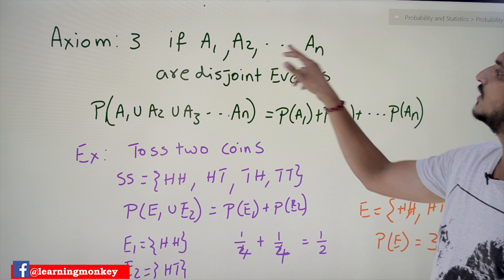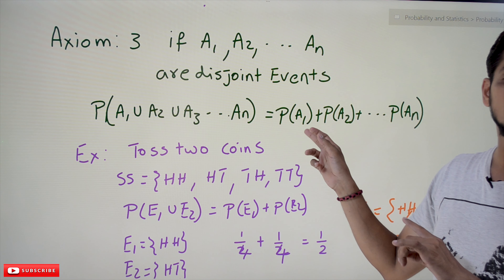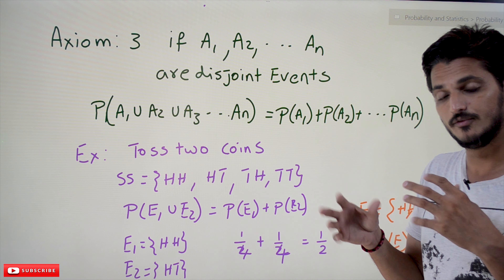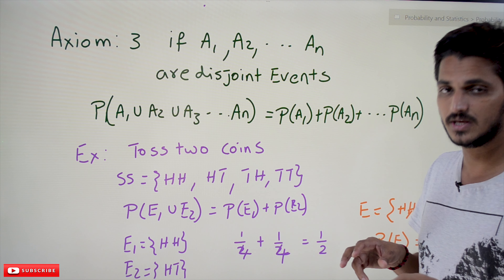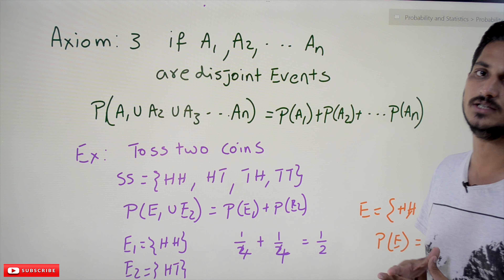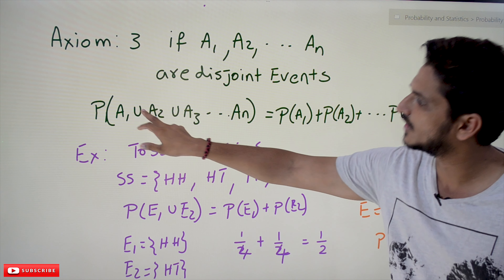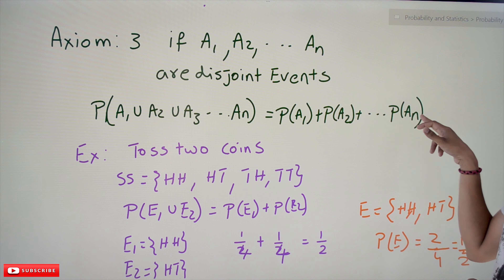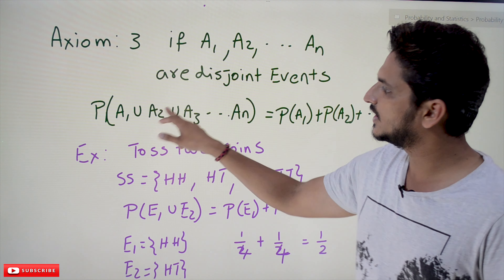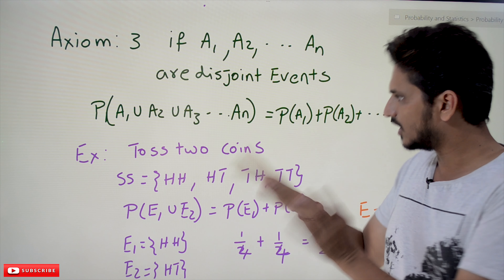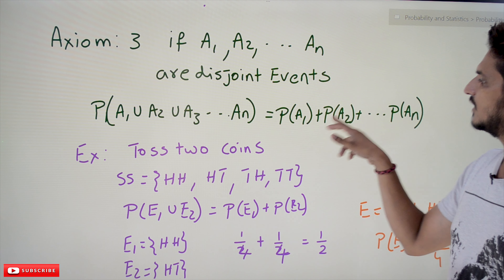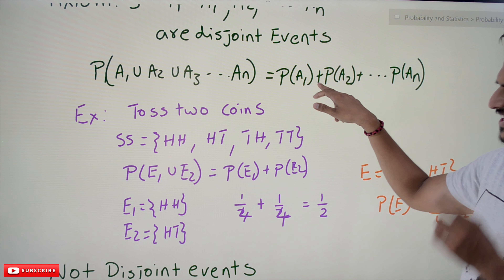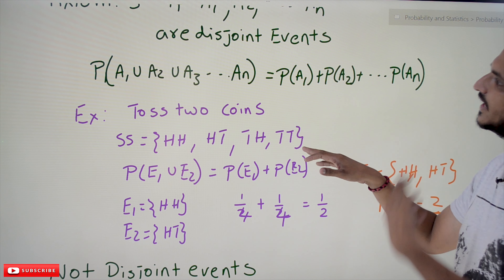Coming to Axiom 3: if A1, A2, ... An are disjoint events — disjoint means mutually exclusive events, which we discussed with graphical examples in our previous class — then the probability of A1 ∪ A2 ∪ ... ∪ An equals probability of A1 plus probability of A2 plus ... plus probability of An. We already discussed this in a previous class, but since it is an axiom we are discussing it again.